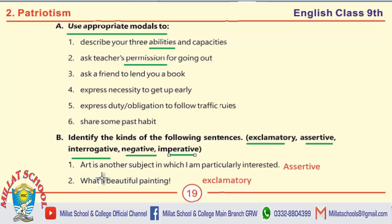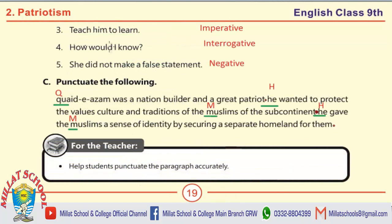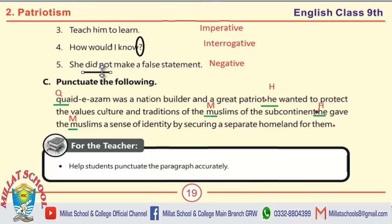The first sentence: Art is another subject in which I am particularly interested — this is an assertive (simple) sentence. What a beautiful painting! — exclamatory sentence. Teach him to learn — imperative sentence. How would I know? — interrogative sentence, indicated by the question mark. She did not make a false statement — here 'not' is used right after the helping verb, so this is a negative sentence.